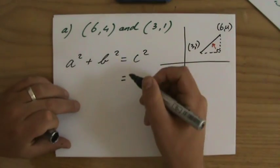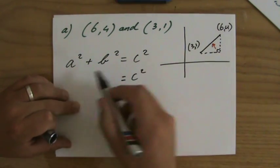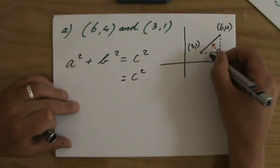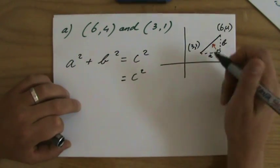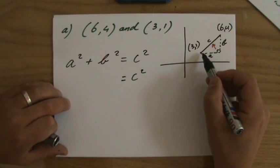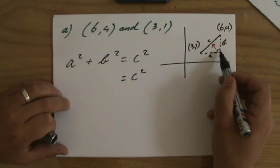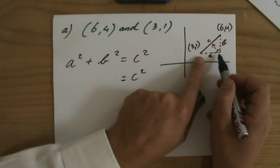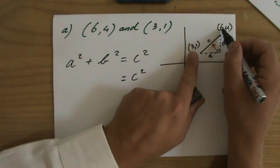In this case with these types of questions, you're always looking for your hypotenuse. a squared plus b squared. Let's call this one a and that one b, but you could turn it around, it doesn't matter, as long as you call this one c, my hypotenuse. What is the length of a? Well, that is a horizontal move.